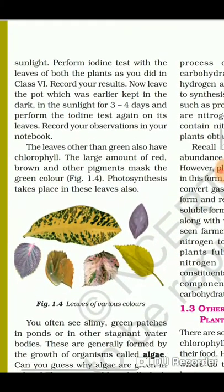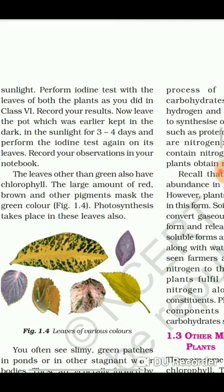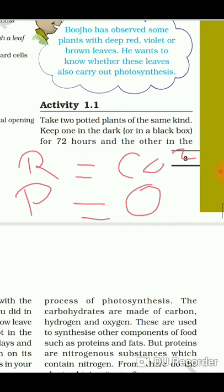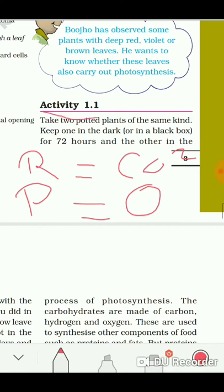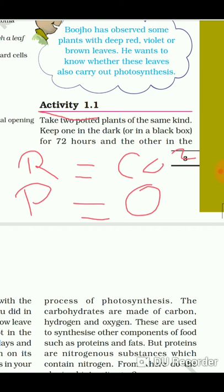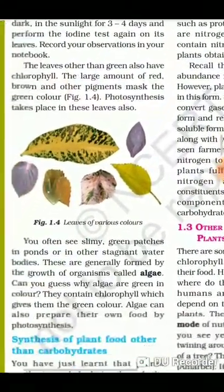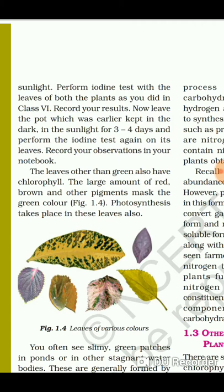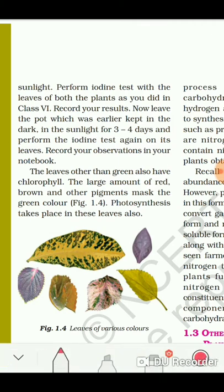You may be asked how to prove that the leaves of a plant contain starch or not. According to Activity 1.1, if you want to test the presence of starch in a leaf, you take two leaves and perform the iodine test with them. You can further explain this answer according to your requirement.